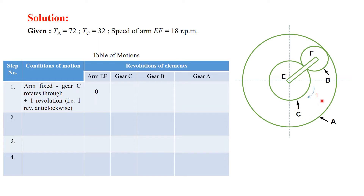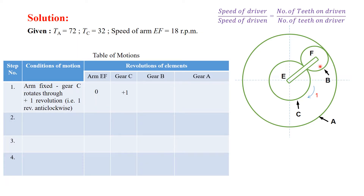For gear C, we are giving an input motion of plus one revolution in the anticlockwise direction, so gear C will have plus one revolution. Now to calculate the speed of gear B: gear C will be the driving gear and gear B will be the driven gear.